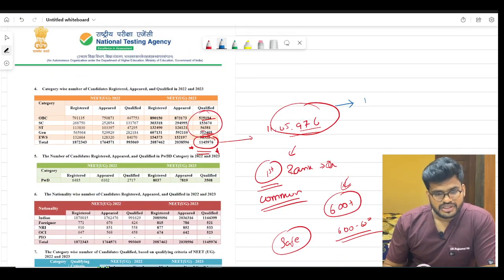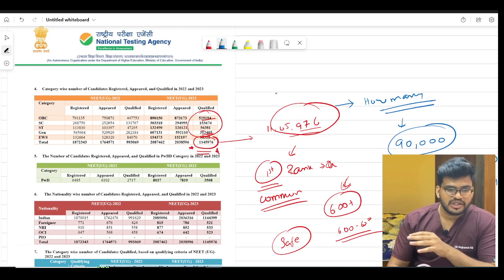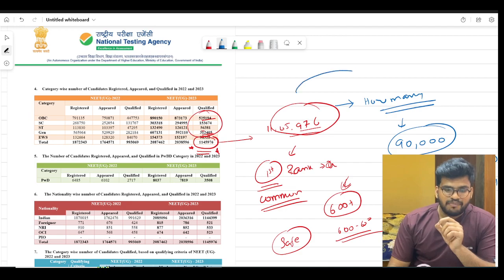Approximately 45,000 will be government seats, remaining 45,000 will be private seats. This is the situation - 11 lakh 45,976 people qualified the exam, but the reality is only 90,000 seats are available. It's very hard, but be brave.